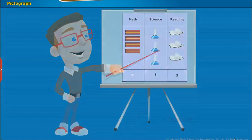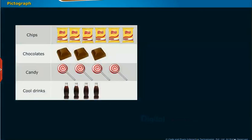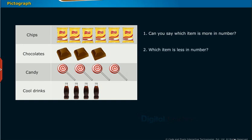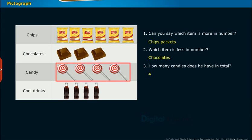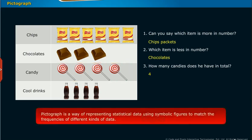Pictograph: Observe the pictograph shown on screen. It represents the different items a shopkeeper has in his shop. By looking at the chart, can you say which item is more in number and which item is less in number? How many candies does he have in total? All these can be easily answered: chips packets are more in number, chocolates are less in number, and candies are 4 in number, by looking at the pictures of different items.